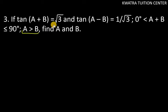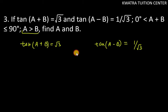Find A and B. So here we have two equations: tan(A + B) is equal to √3, and the other equation is tan(A - B) is equal to 1/√3.